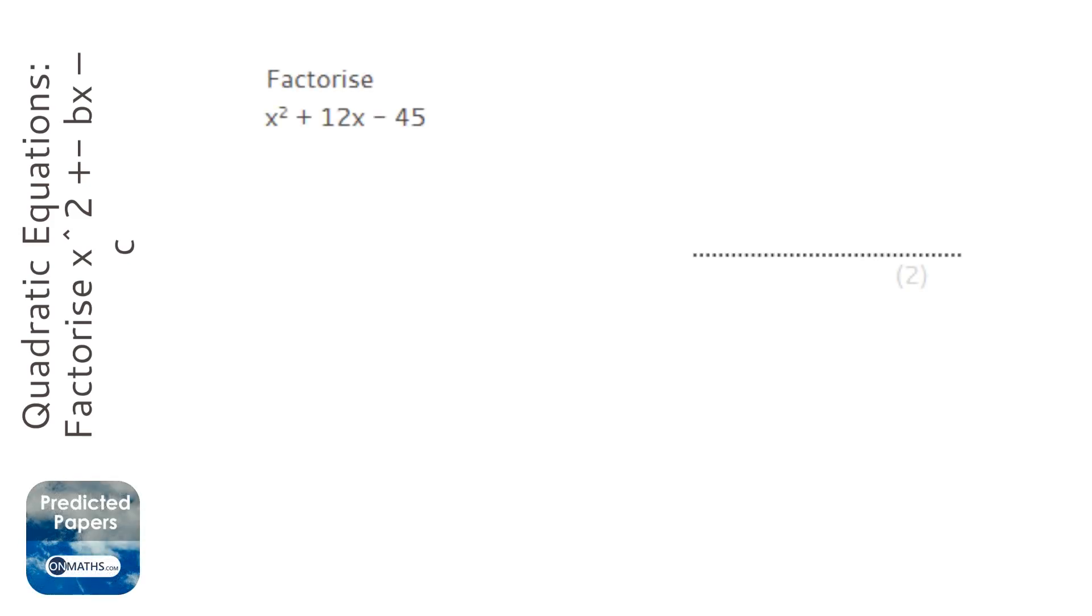This question asks us to factorise, which means put it into brackets. It's a quadratic because it has an x squared, an x and a number term.